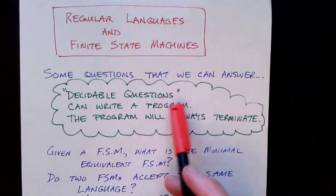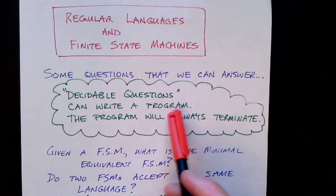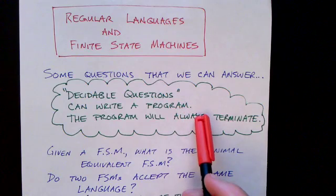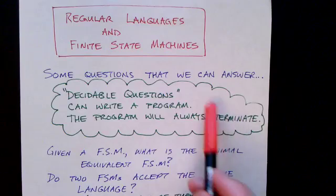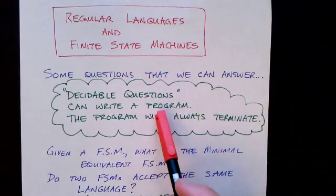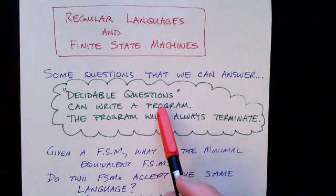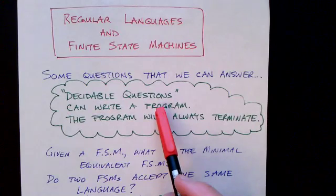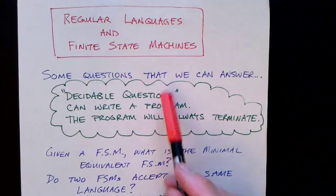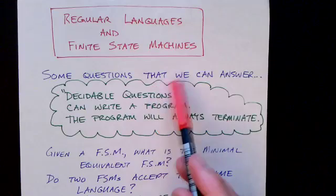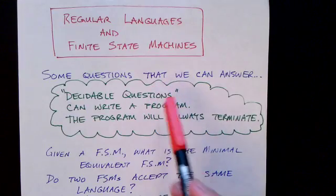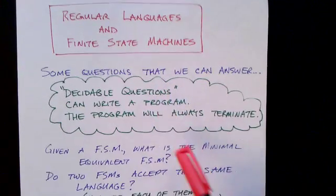If a question is decidable, it means we can write a program that will take as input an instance of the problem, and that program will give you the answer and it will never loop. It will always terminate. So decidable questions are good. Things that are not decidable, we can't really write programs for them.